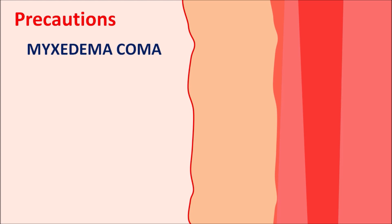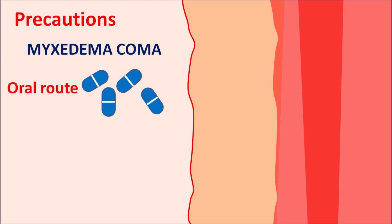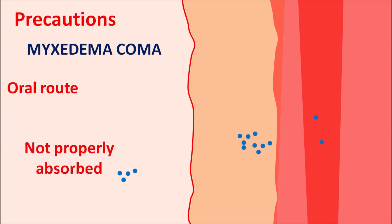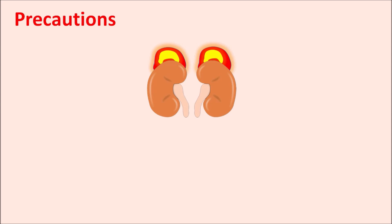A second important precaution relates to myxedema coma — a condition involving thyroid enlargement due to hypothyroidism. In this condition, blood supply to the GI tract is reduced, so oral levothyroxine is poorly absorbed through the colon and insufficient drug enters systemic circulation. Therefore, in myxedema coma, oral route should not be selected; instead levothyroxine should be given by IV route so the drug can directly enter systemic circulation.